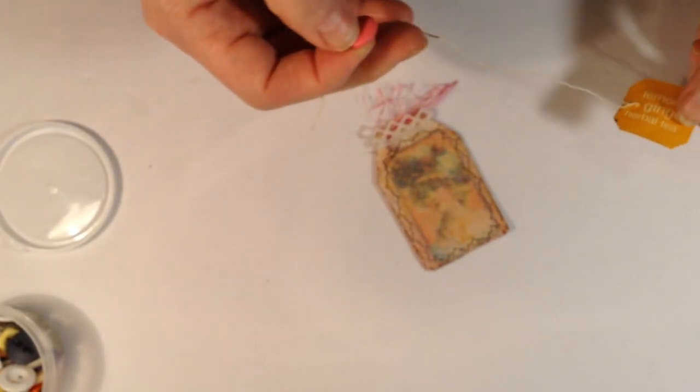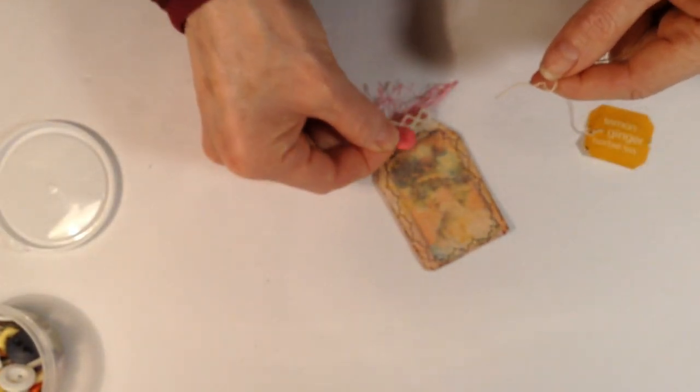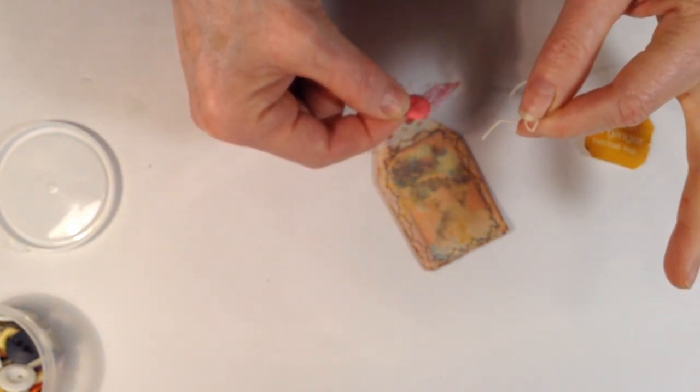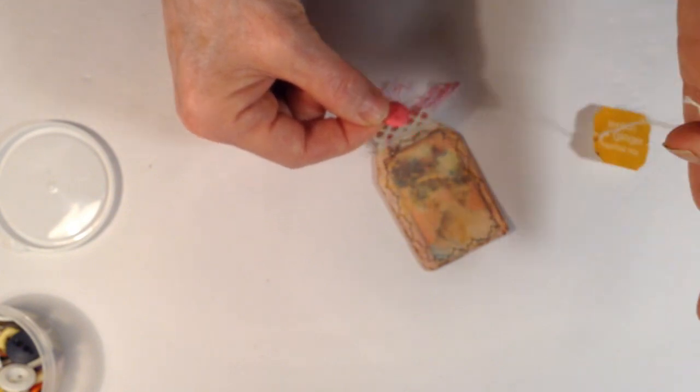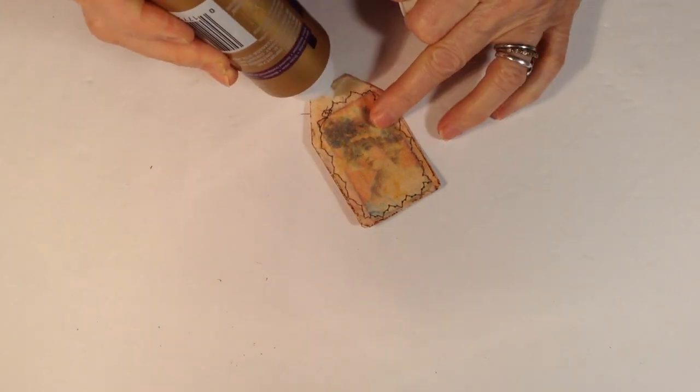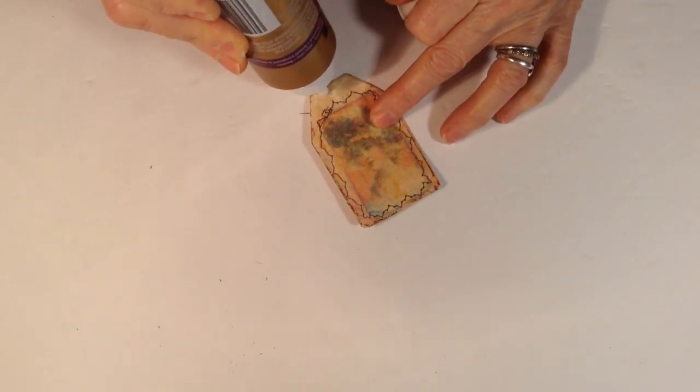And then in order to reconnect our tea bag tag, I'm gonna take this button and I'm gonna sew it on with this tea bag tag string. Okay, so I'm gonna get my glue, add a little bit of glue up here on the top.